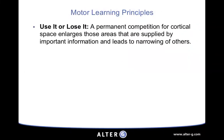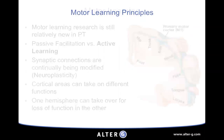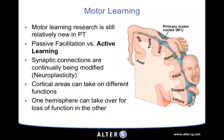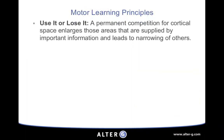Some principles we use to take advantage of neuroplasticity for motor learning include 'use it or lose it.' If you don't use a certain skill, those areas in the cortical homunculus don't develop. As you can see, fine motor areas like the hand are larger than areas like the foot. If we don't use our skills that develop certain areas, you're going to lose those areas. So be sure you're practicing your functional skills.